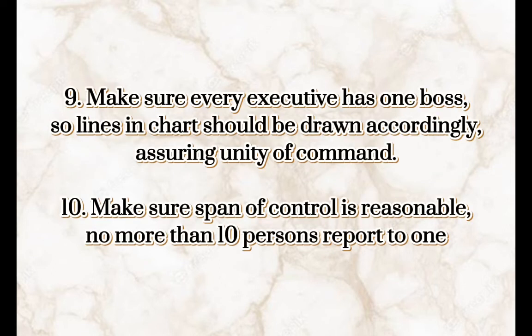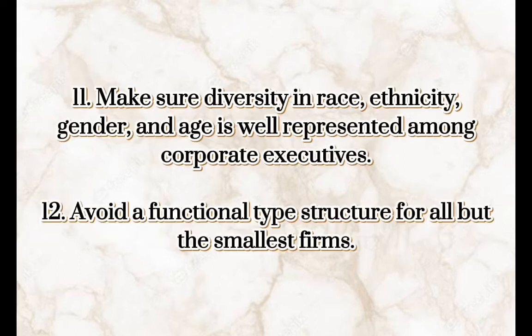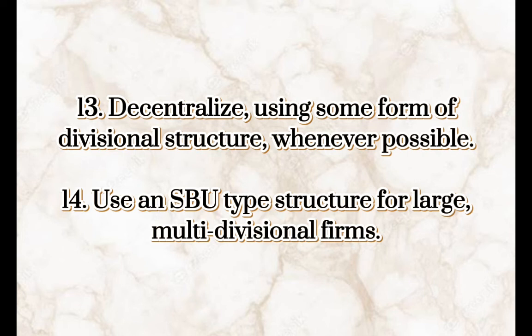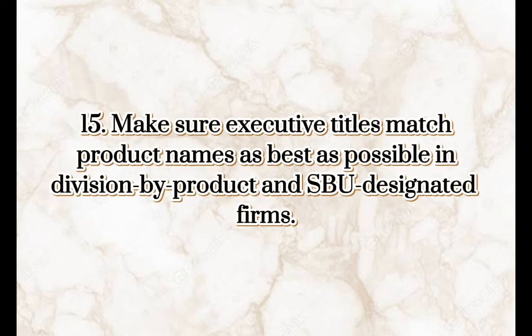Nine: make sure every executive has one boss, so lines of authority should be drawn accordingly, assuring unity of command. Ten: make sure span of control is reasonable — no more than 10 persons report to one manager. Eleven: make sure diversity in race, ethnicity, gender, and age is well represented among corporate executives. Twelve: avoid a functional type structure for all but the smallest firms. Thirteen: decentralize using some form of divisional structure whenever possible. Fourteen: use an SBU type structure for large multi-divisional firms. Fifteen: make sure executive titles match product names as best as possible in division-by-product designated firms.